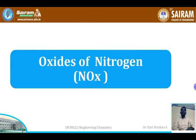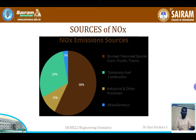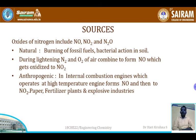Now let us look at oxides of nitrogen — their sources, ill effects, and control. According to data, 58 percent is caused by on-road and non-road sources such as cars, trucks, and trains. 29 percent is from stationary fuel combustion, 10 percent from industry and other processes, and the remaining 3 percent from miscellaneous sources.